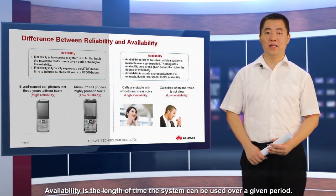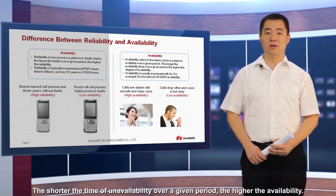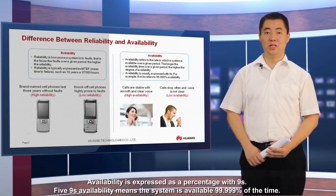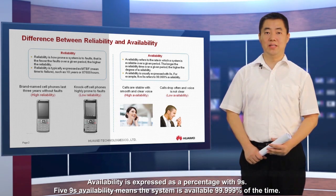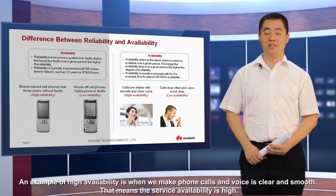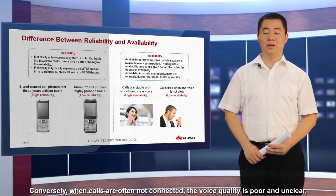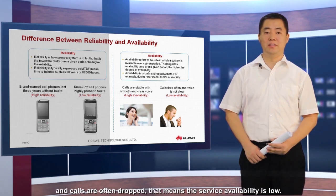Availability is the length of time the system can be used over a given period. The shorter the time of unavailability over a given period, the higher the availability. Availability is expressed as a percentage with nines — five nines availability means the system is available 99.999% of the time. An example of high availability is when we make phone calls and the voice is clear and smooth. Conversely, when calls are often not connected, voice quality is poor, and calls are often dropped, the service availability is low.